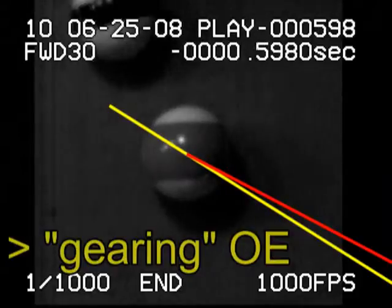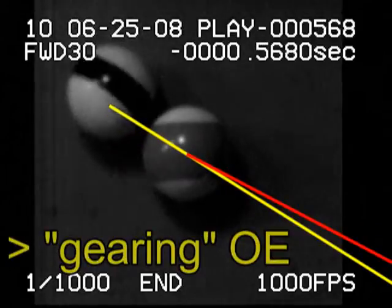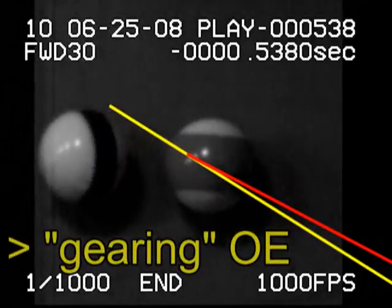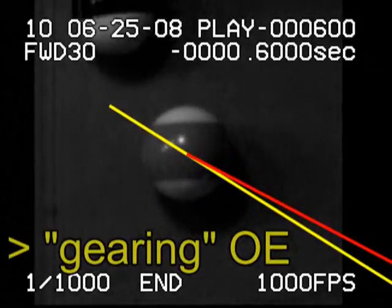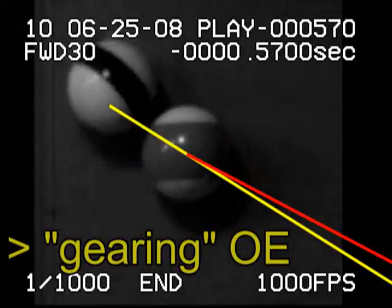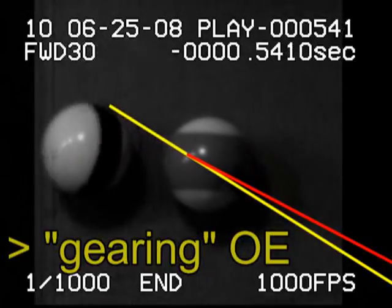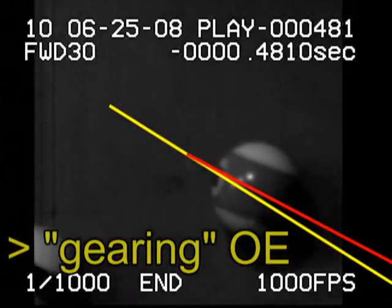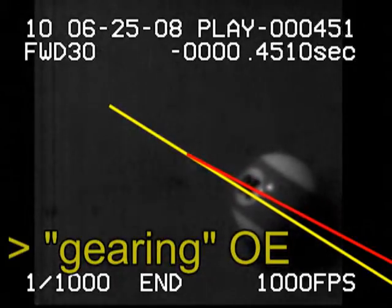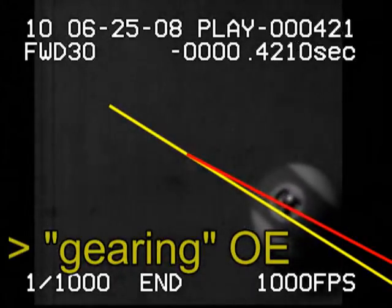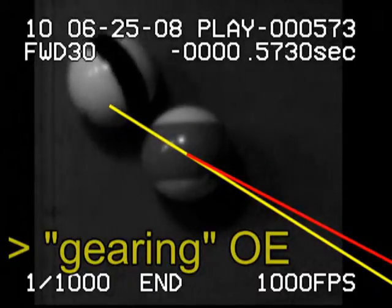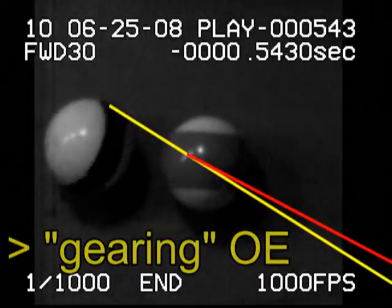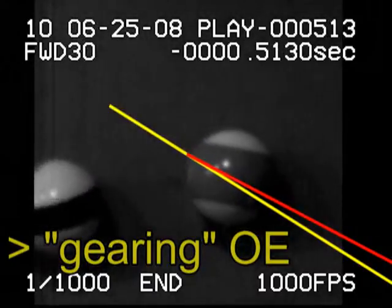When you have more than gearing outside English, you get spin-induced throw. In this case, the cue ball is sliding backwards along the object ball during contact, and that throws the object ball to the left of the line of centers. The throw also imparts a small amount of clockwise spin to the object ball.